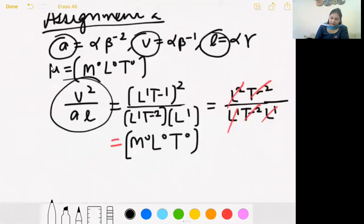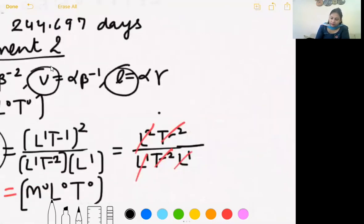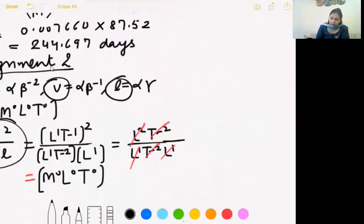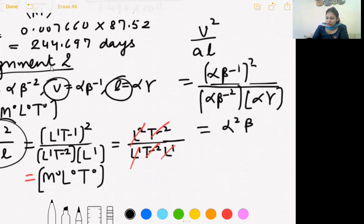So let us see what we get after this. V square over A L. V square alpha beta minus 1 square over A is alpha beta minus 2, alpha gamma. Alpha gets cancelled, beta gets cancelled.